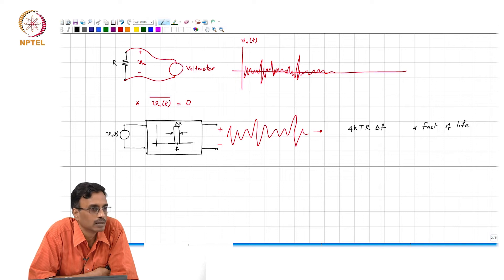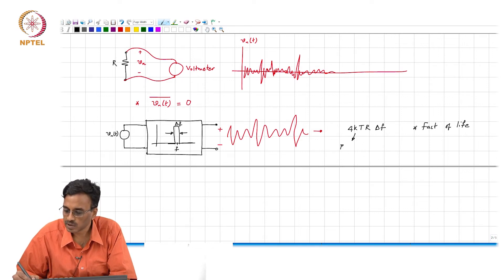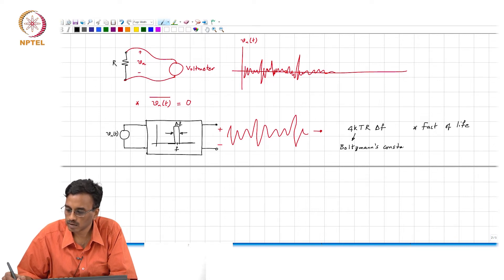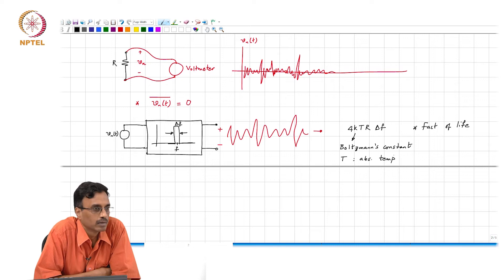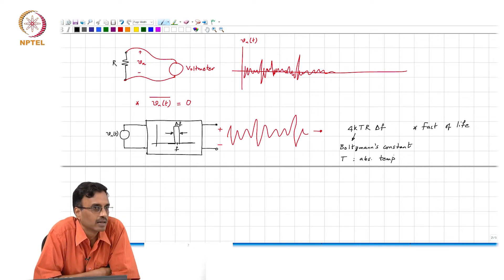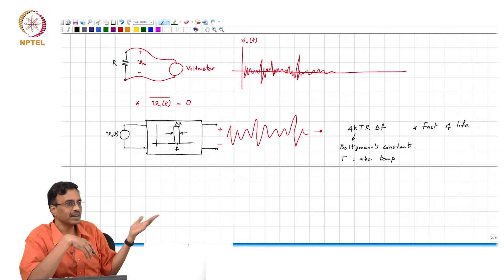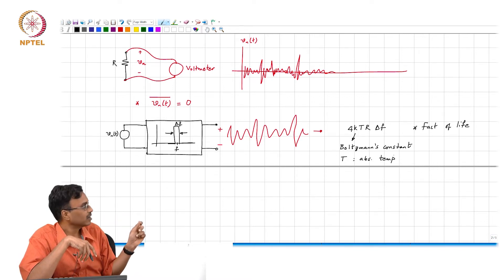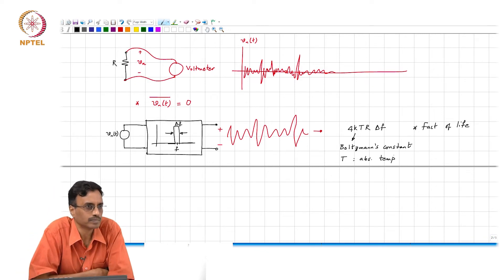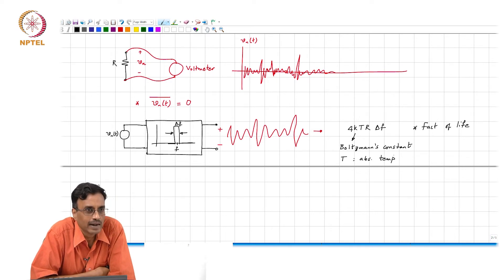So what is kind of strange about this formula? I mean, do you find something strange at all? By the way, 4 is 4, k is Boltzmann's constant, T is absolute temperature, R of course is the resistance value, and delta f is the bandwidth of the filter. So what do you find somewhat puzzling about this? It does not have f at all. So basically this is telling you that no matter where the center frequency of the band pass filter is, the output mean square noise always happens to be 4kTR times delta f.